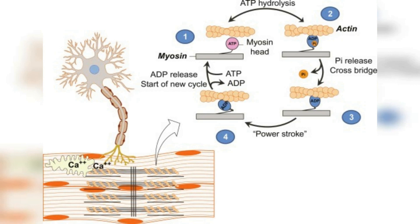The released calcium ions bind to troponin, which causes tropomyosin to shift its position and expose the binding site on actin. Myosin heads then attach to actin, forming cross-bridges. The energy for this attachment comes from the hydrolysis of ATP by myosin ATPase.